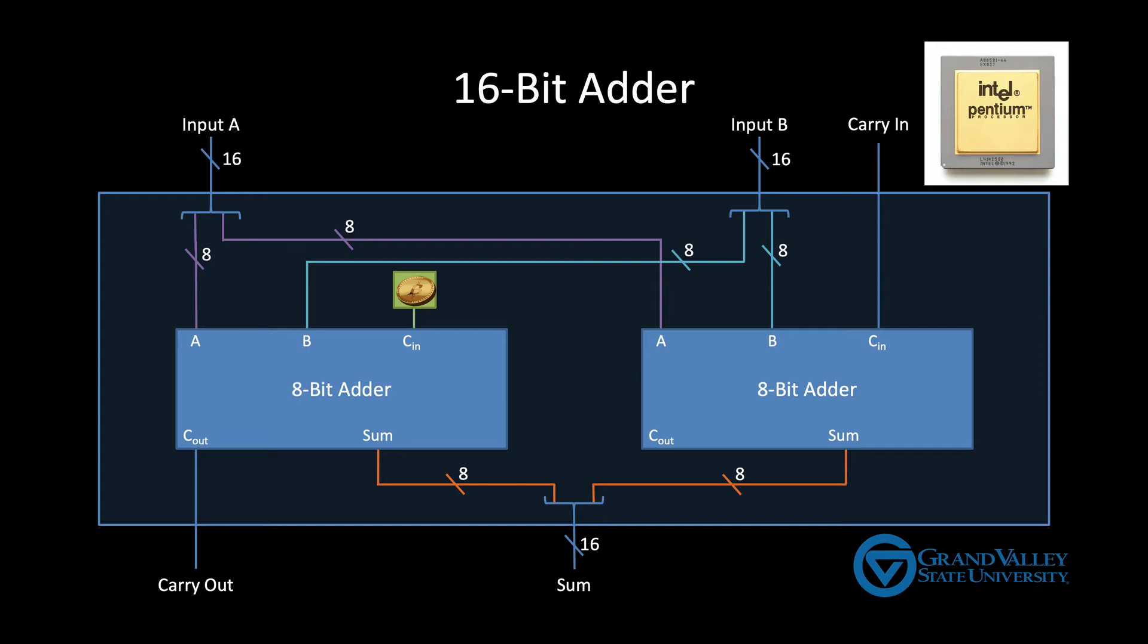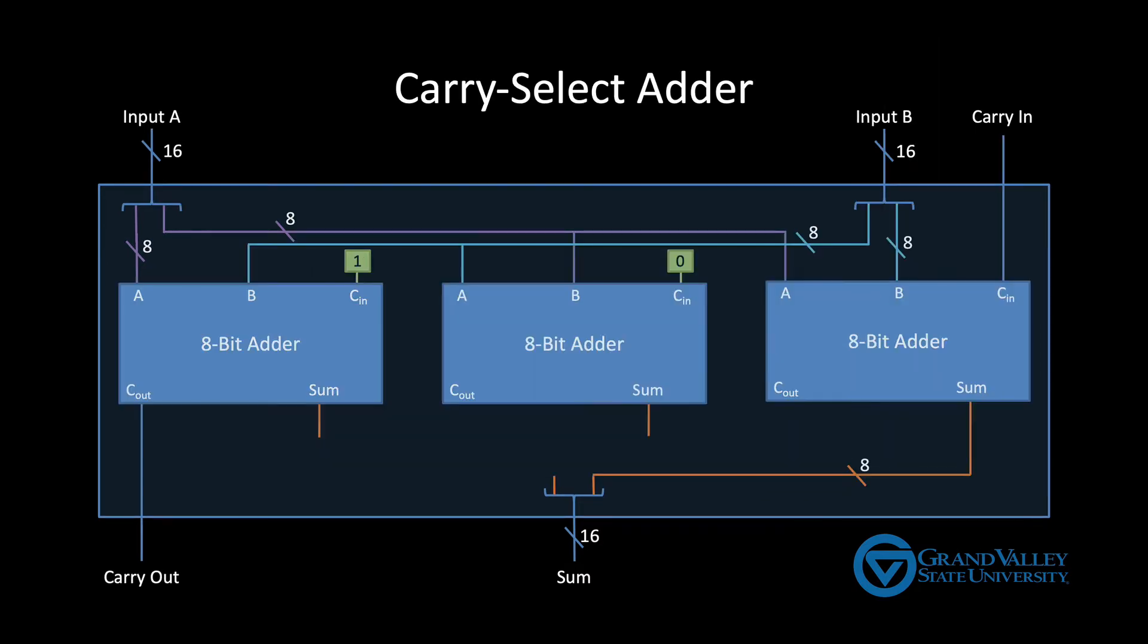So what if we hedged our bets and computed both answers at the same time? That is compute one answer using a carry-in of zero and at the same time compute a different answer with a carry-in of one. One of those two will be correct. So this 8-bit adder on the right computes the least significant 8 bits of our 16-bit answer. It depends only on the external inputs so it can begin working immediately.